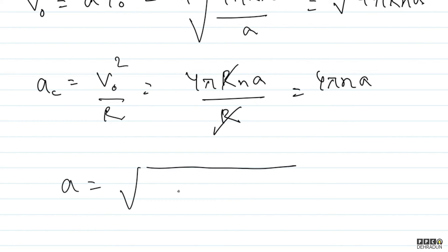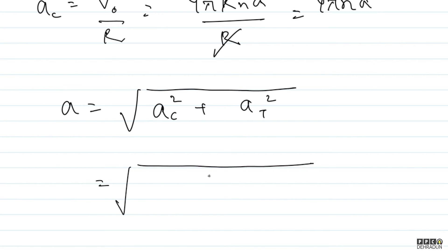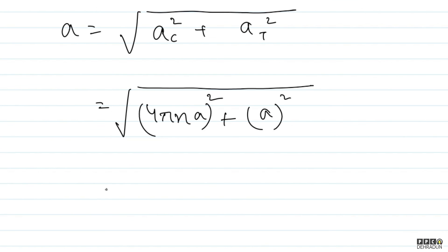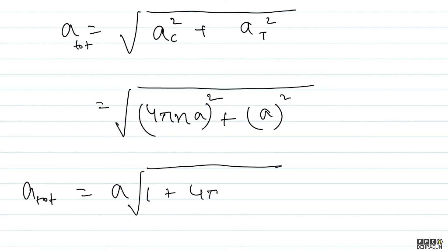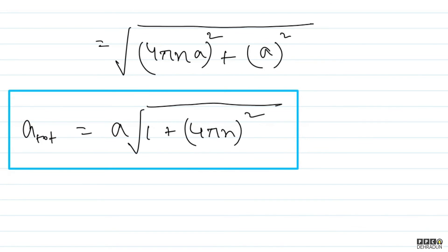Now we need the magnitude of net acceleration: a_total = √(ac² + at²). Substituting ac = 4πna and at = a, we get a_total = √((4πna)² + a²) = a·√(1 + (4πn)²). So the final answer is: total acceleration = a·√(1 + (4πn)²). I hope the solution was clear. If you have any doubt, feel free to contact me. Take care, bye bye.